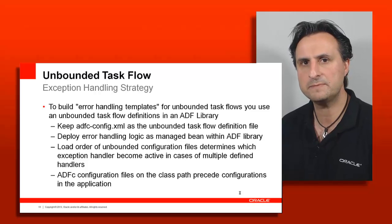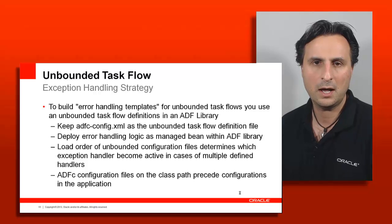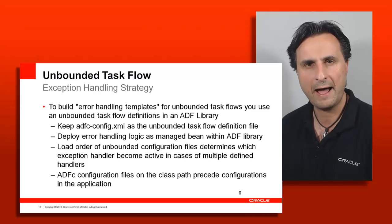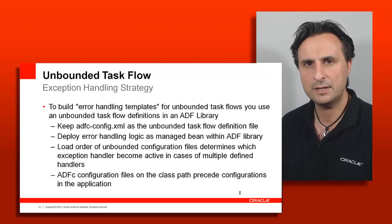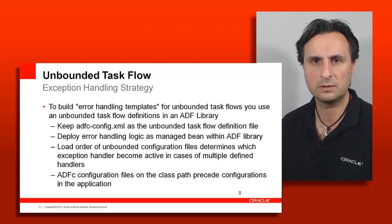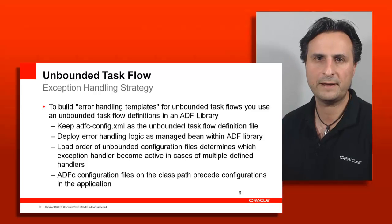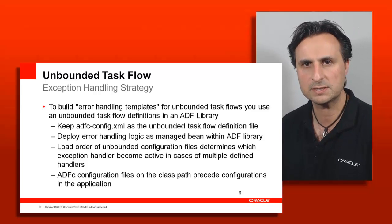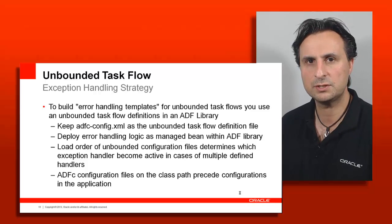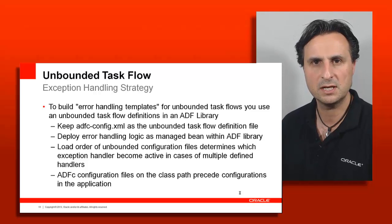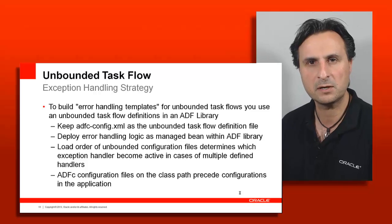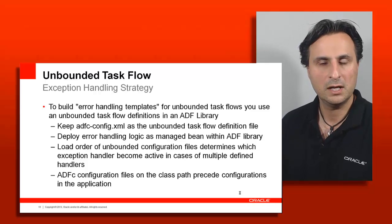The exception handling strategy in summary: use an error handler template for bounded task flows; use the ADFC config file to configure error handling on the unbounded task flow level. There's no excuse to have no error handling. The loading order of task flow definition files means the ADFC config file found in the library is found first, so it will implement its error handling over what you would specify for each application individually. That concludes the third session on error handling covering the controller facilities. The next and final session is about the ADF view layer and error handling there.